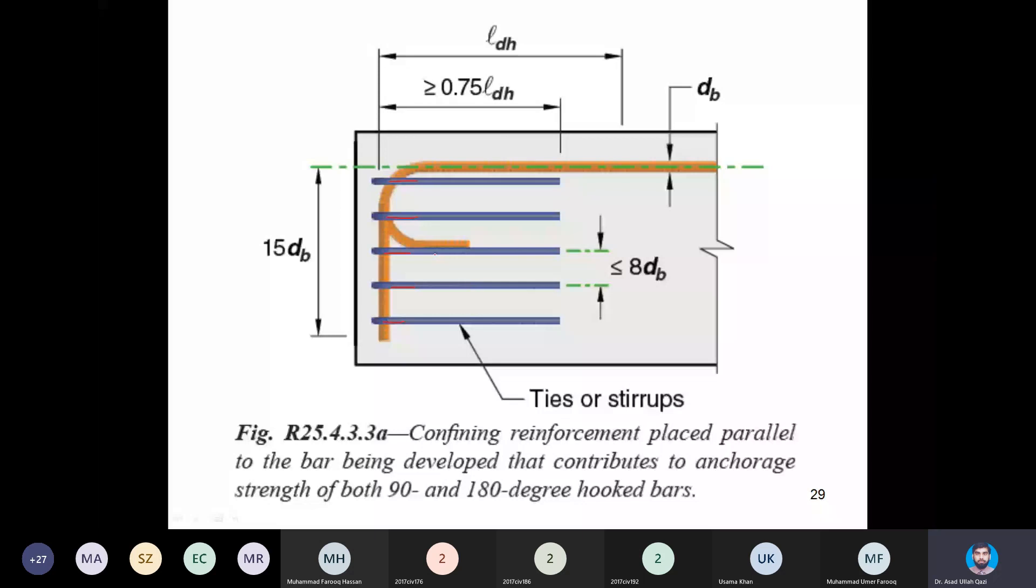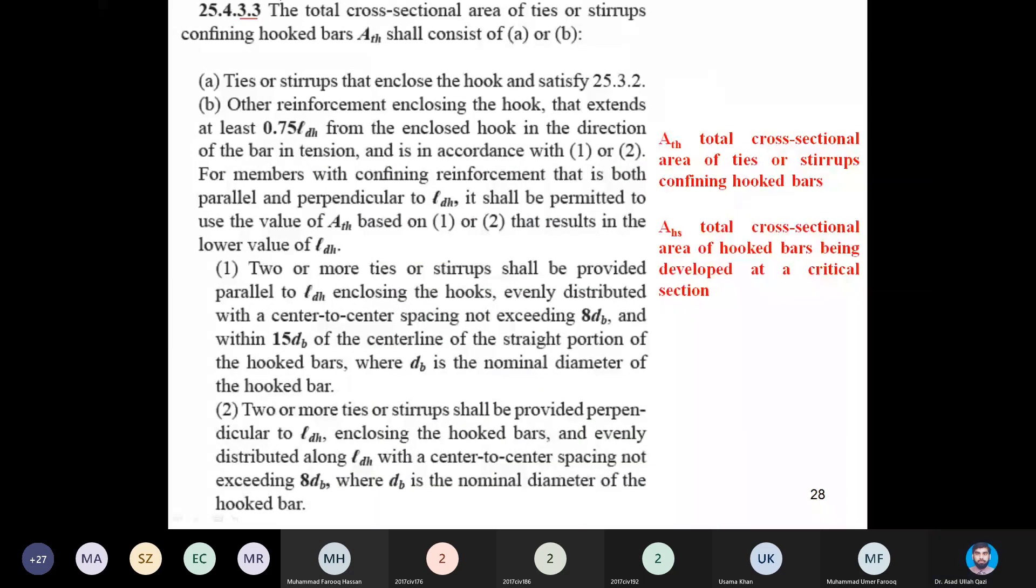It is the total cross-sectional area of ties or stirrups confining hook bars. ATH shall consist of A or B. Again, they are giving you permission to calculate it through A or B. They are not asking for greater than or smaller than - there must be AND in between. Now it is stated OR, so you can use either A or B.